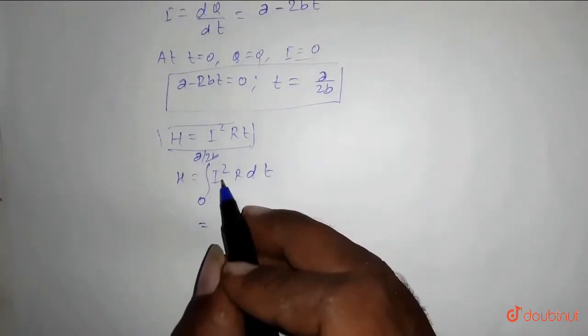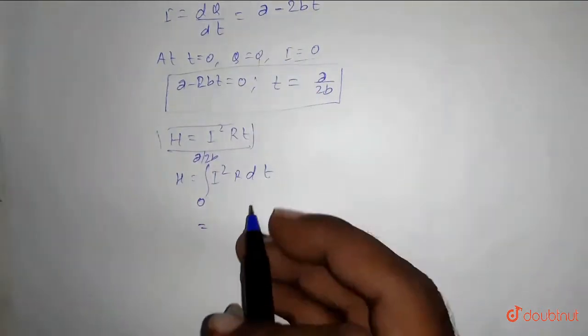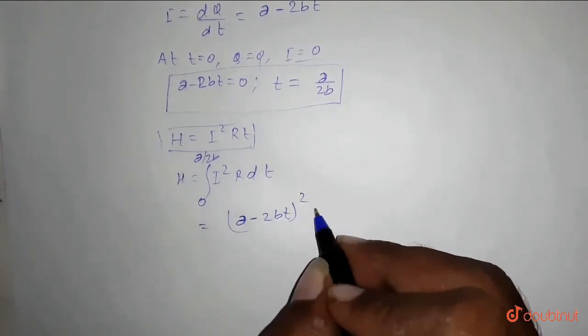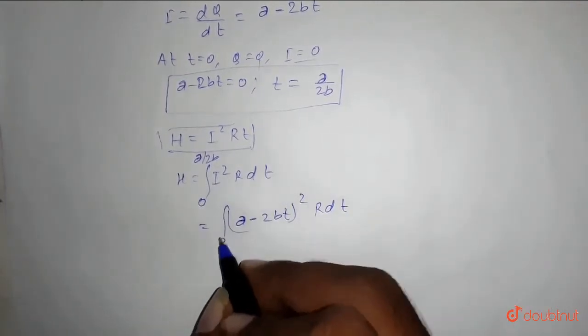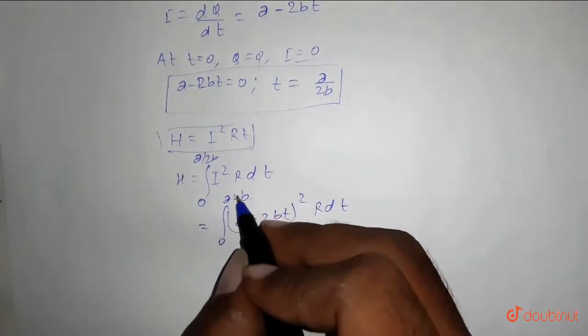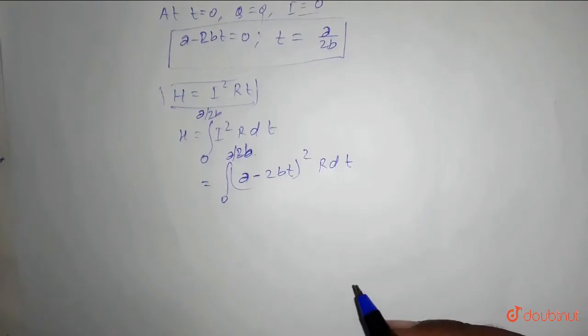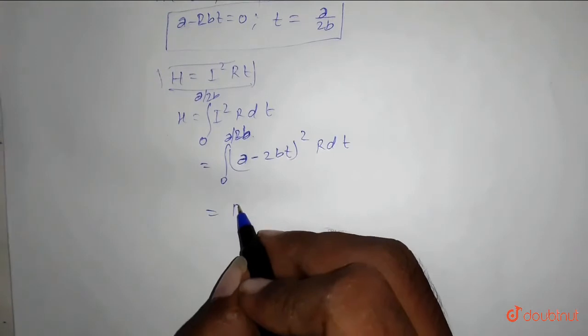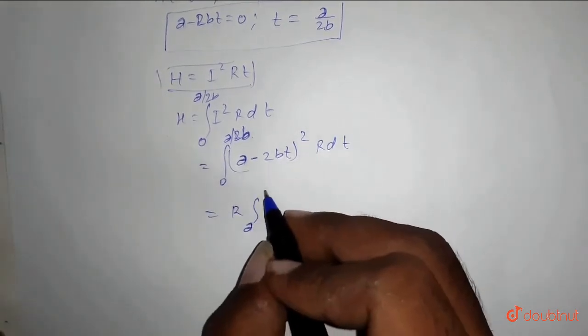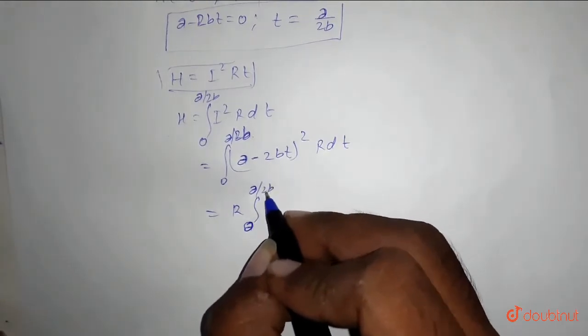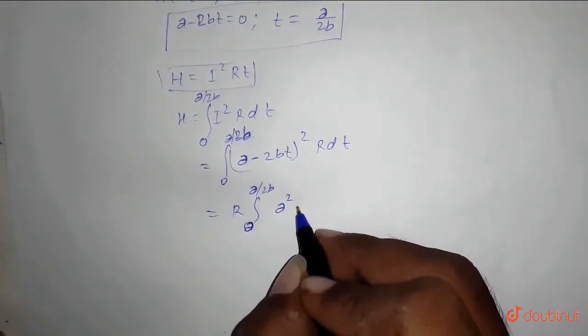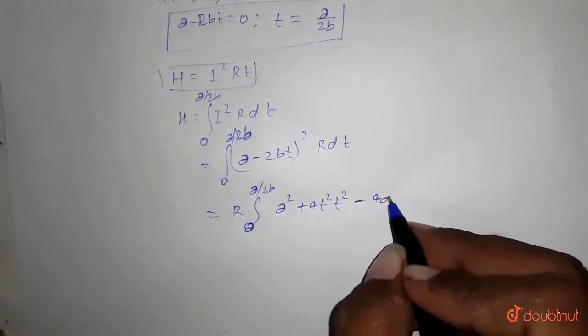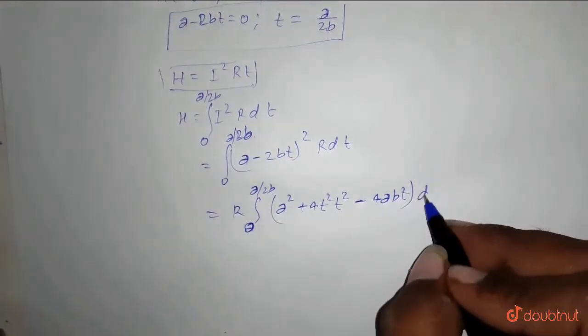So from this we can put i equals a minus 2bt. So we put a minus 2bt whole square R dt, integration from 0 to a by 2b. So from this, R is a constant so we will just put it out and we can just expand this from 0 to a by 2b. So it will be equals to a square plus 4b square t square minus 4abt, integration of this with respect to dt.